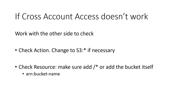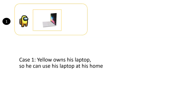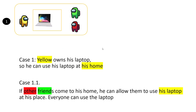Because it's a little bit hard to teach, I'm going to use a real-life example and then convert it back to the bucket scenario with a demo. In my first example, this is yellow — yellow owns his laptop and can use it at his home. In case one, if some other friends come to his home, yellow can allow green and red to use his laptop at his place. So everyone will be able to access this laptop.